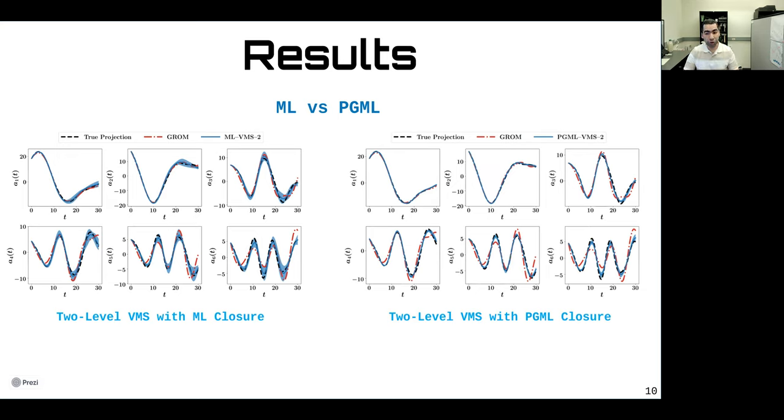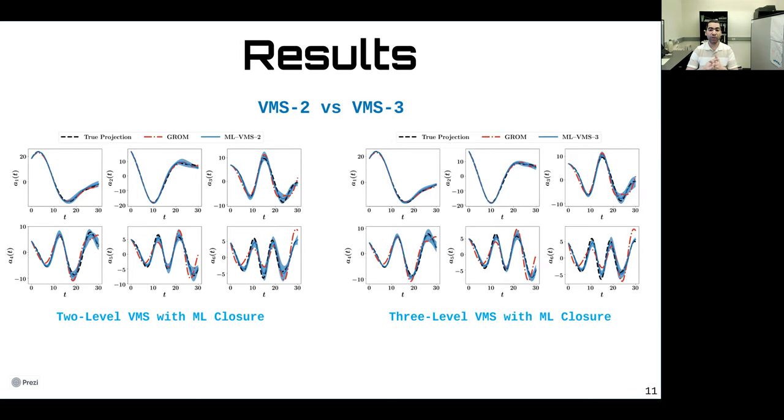Here, we compare the machine learning closure with the physics-guided machine learning closure with two-level or two-scale VMS framework. In particular, we run an ensemble of models with 10 different neural networks initialized with different seed numbers for the weights and biases before we do the training. We see that on average, if we consider the mean trajectory given by the solid blue line, the prediction is much better than the Galerkin ROM, which doesn't use any closure or any correction. However, looking at the uncertainty levels, we see that the ML model has larger uncertainty than the PGML. We repeat the analysis by comparing the two-level and the three-level framework. We see that significant improvements are obtained with the three-level VMS even without injecting any physics-based features.